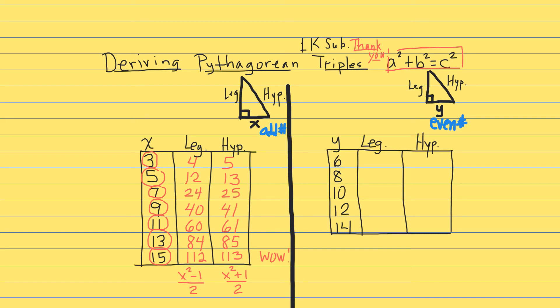Let's take a look at the second column, and here we're talking about an even number where y is an even number, and we'd like to see how we're going to get a leg and the hypotenuse out of that. On this one we're going to take the 6. Half of 6 is 3, and we square the 3. 3 squared is 9, and then we subtract 1, that's 8, and 9 plus 1 is 10. So we have 6-8-10.